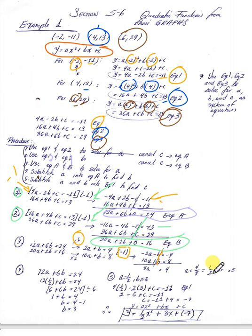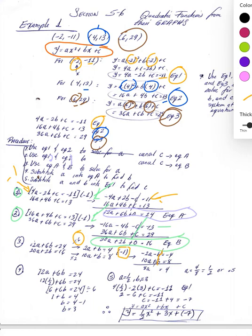Now in step four, you substitute a equals one-half back into equation A, which is 12a plus 6b equals 24. Solving for b gives you b equals 3.